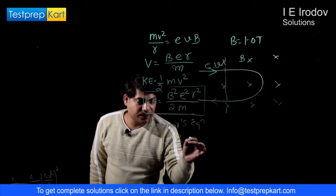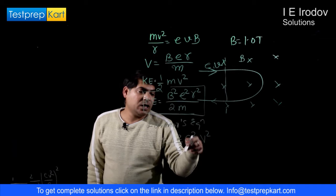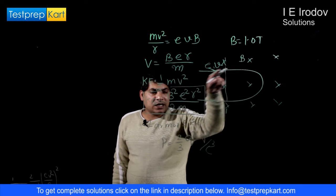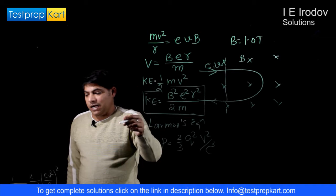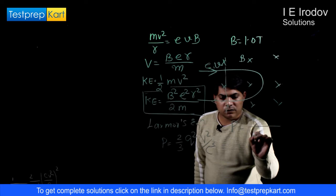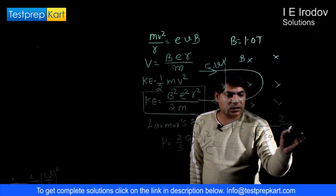Radiated power can be written as 2/3 q²a²/(c³ε₀), where q is magnitude of charge, a is acceleration, divided by c³ε₀. So in this case as proton is moving in magnetic field then radiated power can be written as P equals 1/(4πε₀) × 2/(3c³) times a².